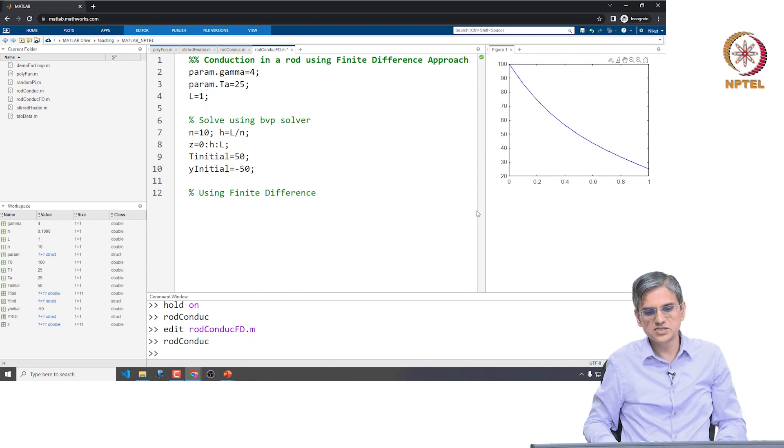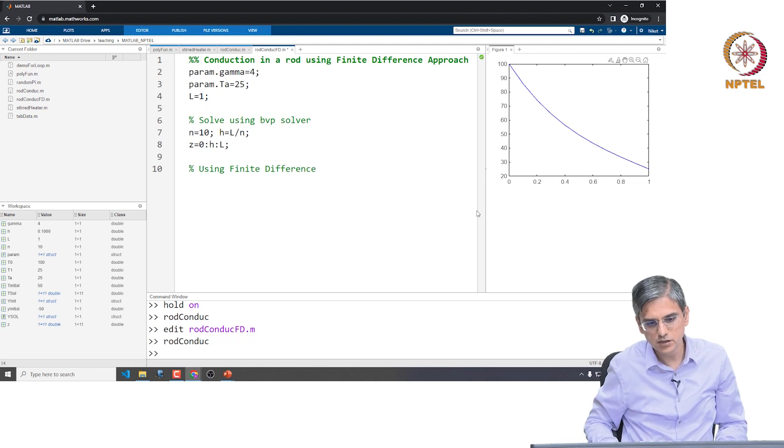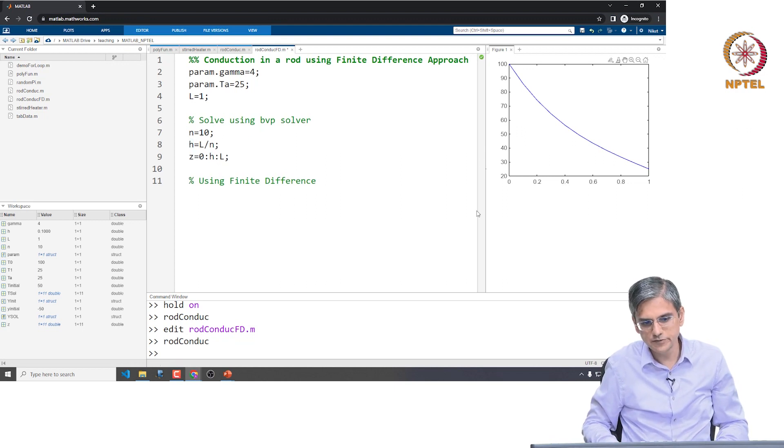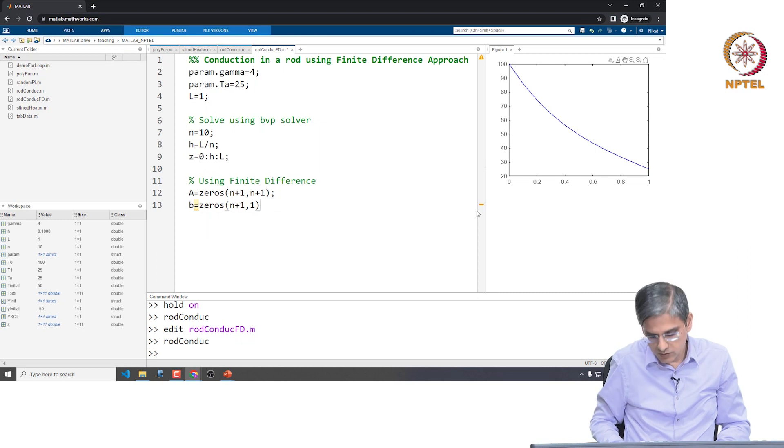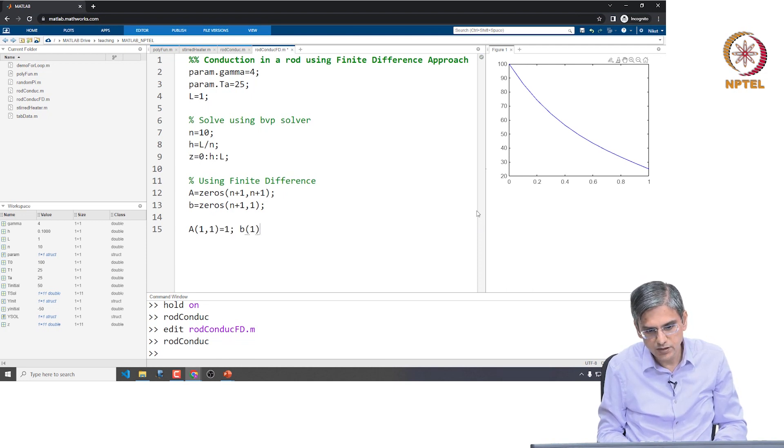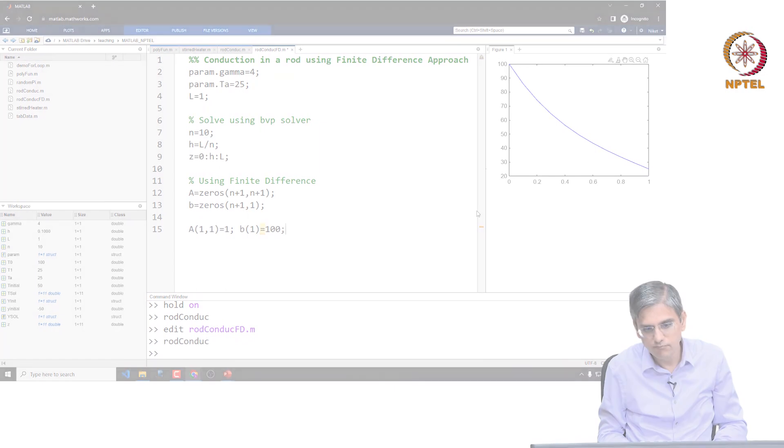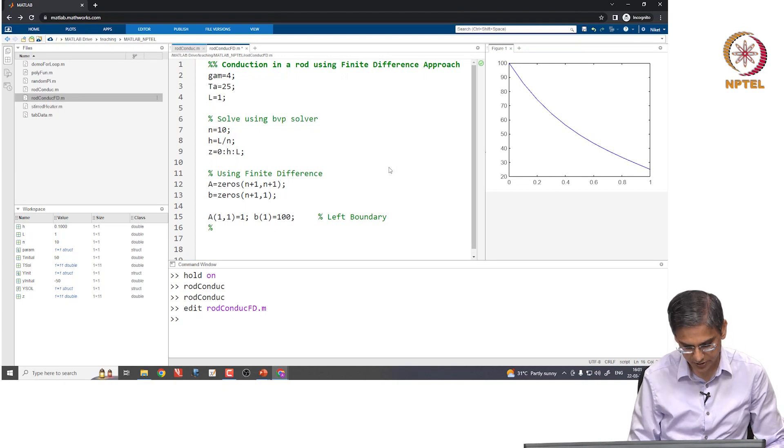Let us now solve it using finite difference approach. Remember what we did over here, we just copy pasted everything. We do not need T initial y initial. We just need the step H. We need the Z probably, maybe not actually, we do not. So, A is nothing but we do not need T initial y initial. So, this is the solution. Now, first boundary condition is A 1, 1 is 1, B 1 is 100.